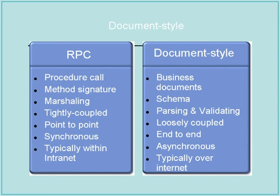This is a characterization of when you might want to use these different styles. If you have a procedure call, you will use RPC. Business documents can be sent via document style. The procedure call has semantics: it's an operation with a set of parameters coming in a particular order, and the receiving side interprets each parameter as a particular type. Document style means you sent a document and somebody knows how to interpret it — things can be in any order but have XML tags. RPC has a method signature; document styles have schemas. RPC is synchronous in nature; document styles are asynchronous. RPC is typically within your company, whereas document styles are used across organizational boundaries.